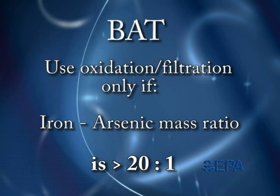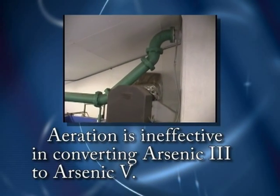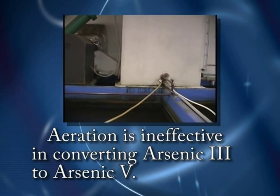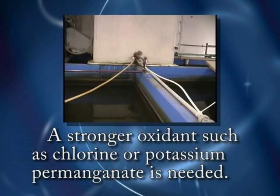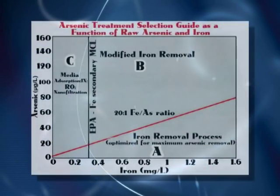EPA determined that oxidation filtration would be listed as a BAT only under the condition that the iron-to-arsenic mass ratio was greater than 20 to 1. This treatment method can be used to meet the revised MCL of 10 micrograms per liter. Aeration for iron oxidation has been shown to be ineffective at converting arsenic-3 to arsenic-5; a stronger oxidant such as chlorine or potassium permanganate is needed.